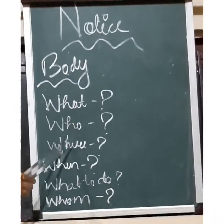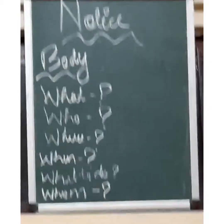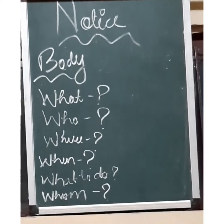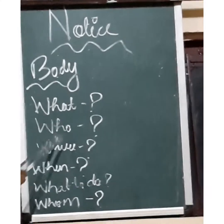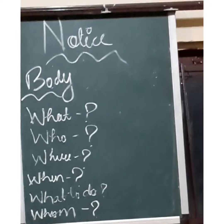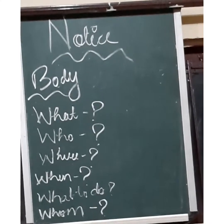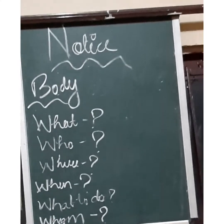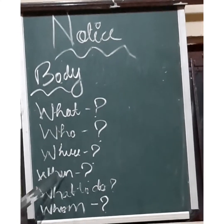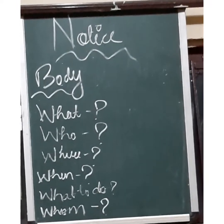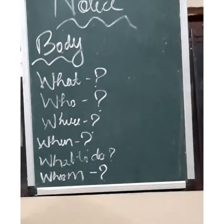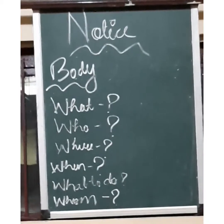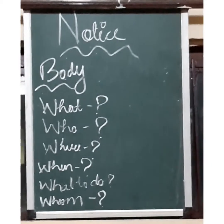Remember to answer the five W's while writing any notice and then you won't have any problems. The first one is what — what is the notice about, what is going to happen or what has already happened. The second is who — who the notice is addressed to, who all are supposed to adhere to the notice. Then comes where — the location of the event must be clearly written. Next is when — the time and date of the event or meeting. What to do — instructions related to the notice. Finally, whom — who the appropriate authority is to contact.